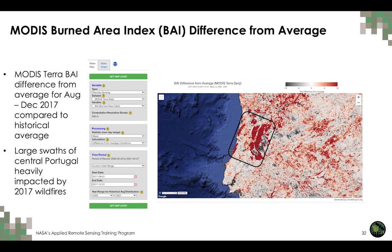We show how to use Climate Engine to visualize the Burned Area Index (BAI) derived from the MODIS instrument on NASA's Terra satellite. Climate Engine computes the BAI difference from average, showing anomalies in burned area for August through December 2017 compared to the same five months over the 20-year period from 2000 to 2021. The ability to produce on-demand anomaly maps in minutes is one of the powers of Climate Engine. The map shows burned areas in dark red within the polygon, representing large swaths of central Portugal heavily impacted by the 2017 wildfires.